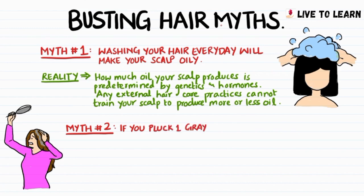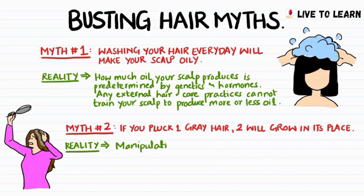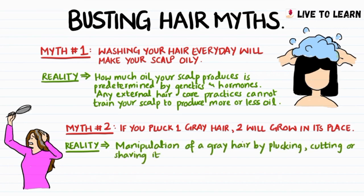The second myth is that if you pluck out one grey hair, two will grow in its place. This is absolutely false. Manipulation of a grey hair by plucking, cutting, or shaving it does not make two grow in its place.